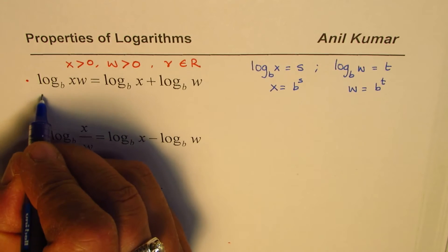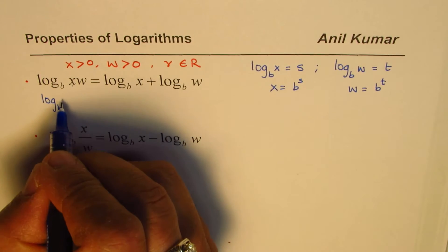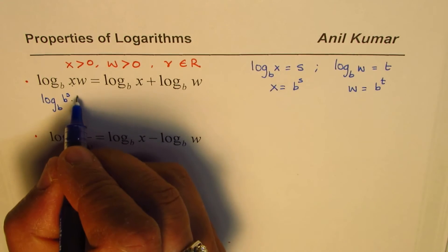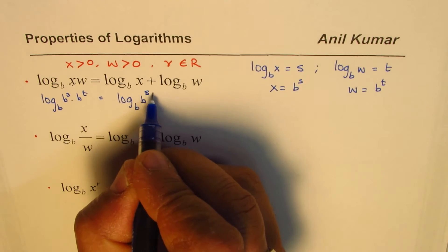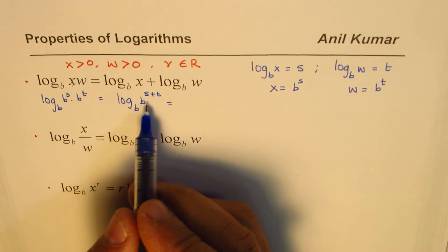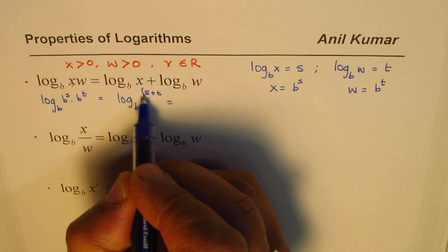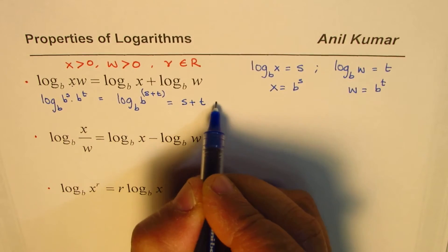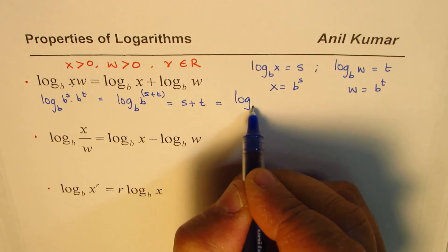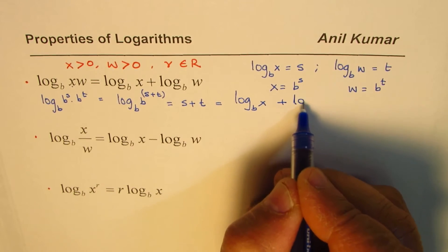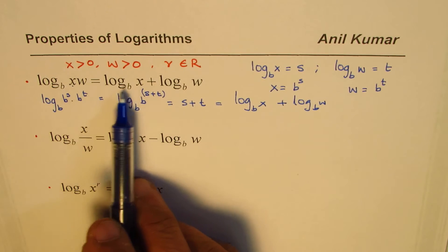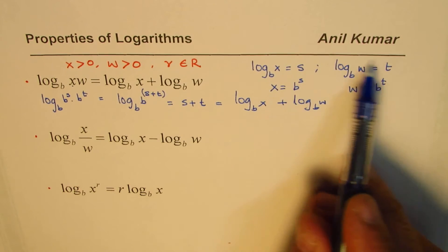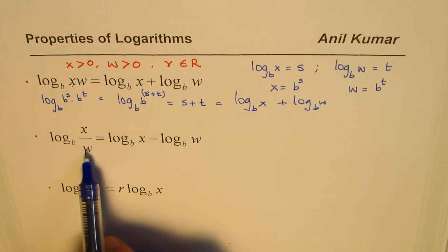Now replacing X and W with these terms, I get log base B of B to the power of S times B to the power of T, which gives us log base B of B to the power of S plus T. From the basic property of logarithms, this equals S plus T. Since S is log base B of X and T is log base B of W, the product of two numbers can be written as the sum of their logarithms.